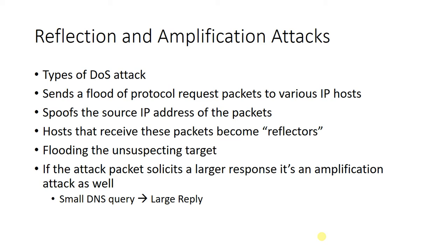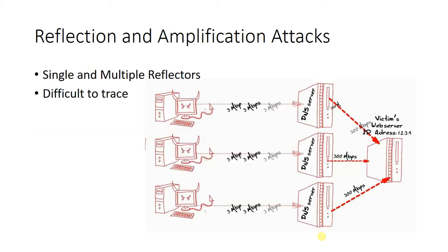Now, if that attack packet is soliciting a large response, then not only is it a reflection attack, it is also an amplification attack. An example of that would be sending a very small DNS query, and that DNS query generates a large DNS response. Now, this could be in the form of a single attacker hitting a target, or it could be multiple reflectors — that would be an example of a distributed denial of service attack.